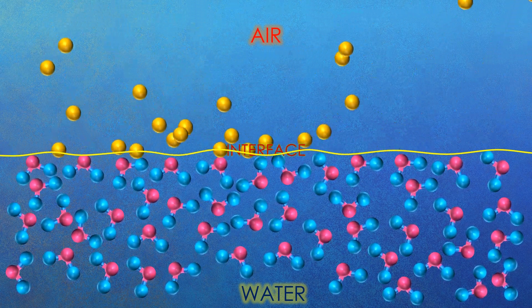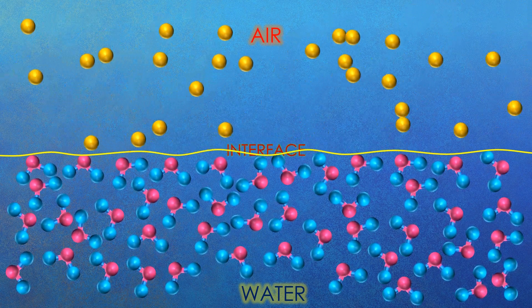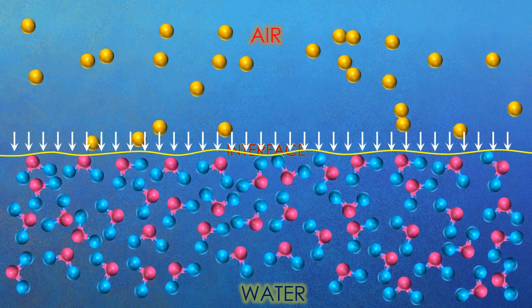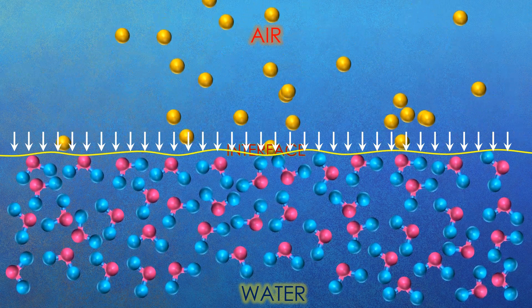You can see that the air molecules are constantly colliding with the water molecules at the interface and in turn generating a pressure on the surface of water. This is the atmospheric pressure exerted by air molecules on the water.